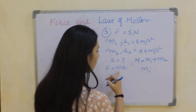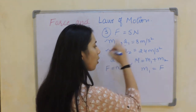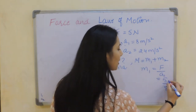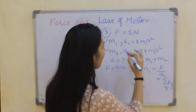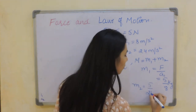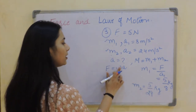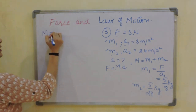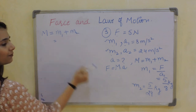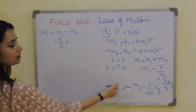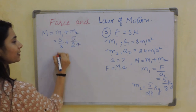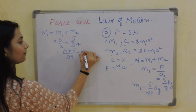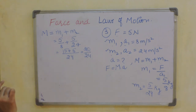M1 equals 5 divided by 8 kg. M2 equals 5 divided by 24 kg. Now I need to find the total M, which is M1 plus M2 — that is 5/8 plus 5/24. The LCM is 24, giving 15/24 plus 5/24, which equals 20/24. Do not divide this yet as we still need to do the calculation.